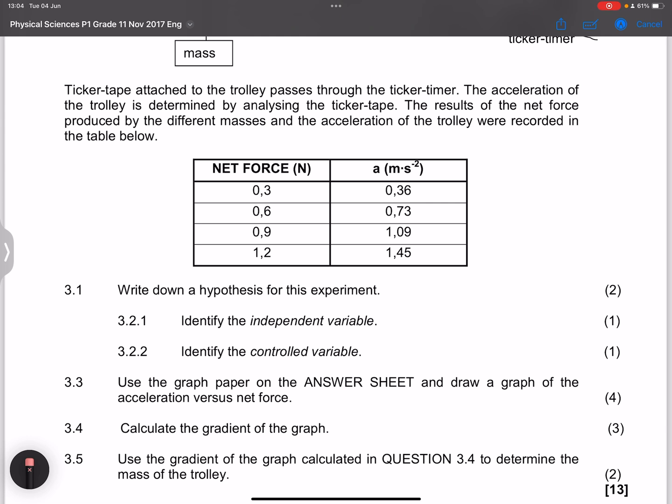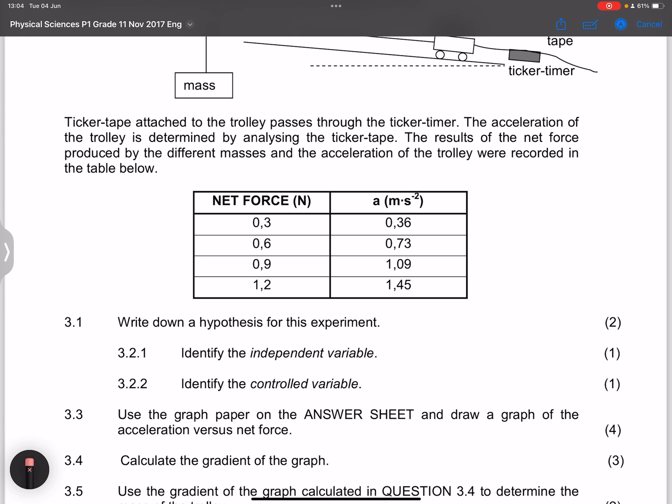They say identify the independent variable. Remember, what would be the independent variable? The independent variable is always what you are changing. So what is it that you are physically manipulating in your data? It is the mass and as a result, the net force that is acting on this guy. So I would say that our independent variable would definitely be the net force. We keep tempering with the net force as we keep changing that mass, it changes the net force.